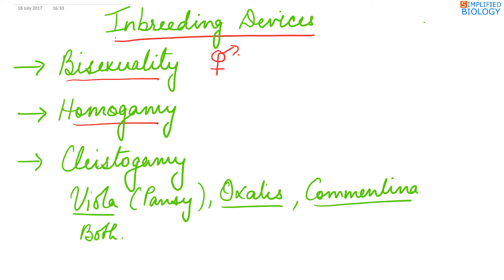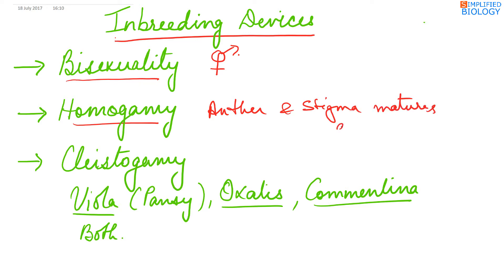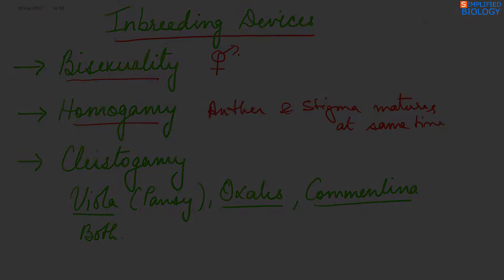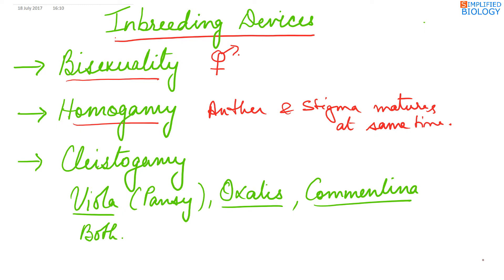Homogamy means when the anther and stigma mature at the same time. When the anther and stigma mature simultaneously, self-pollination can be seen. Next, cleistogamy means the presence of closed flowers.